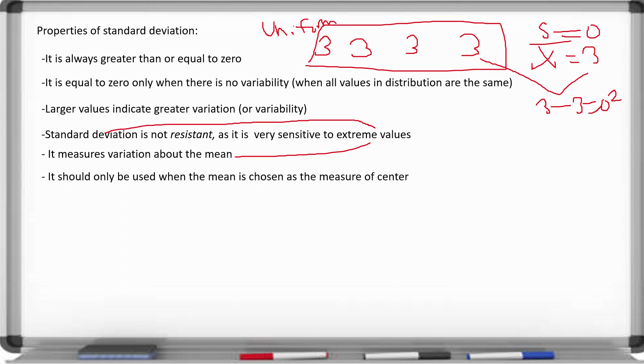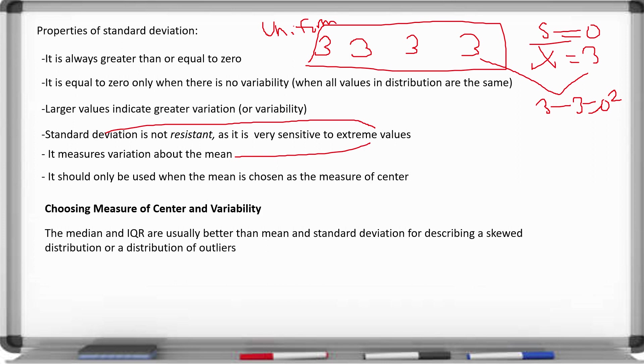The standard deviation should only be used when the mean is chosen as the measure of center. The median and IQR are usually better than the mean and standard deviation for skewed distributions or distributions with outliers, because the mean and standard deviation are influenced by outliers, whereas the median and IQR are not easily influenced by outliers.